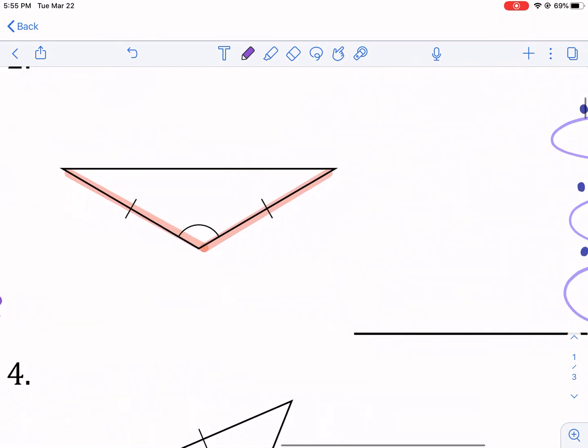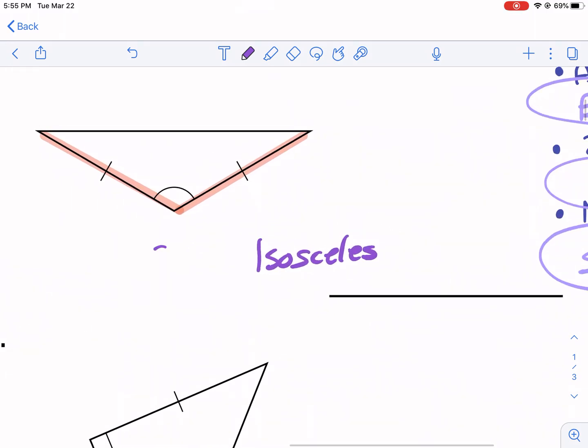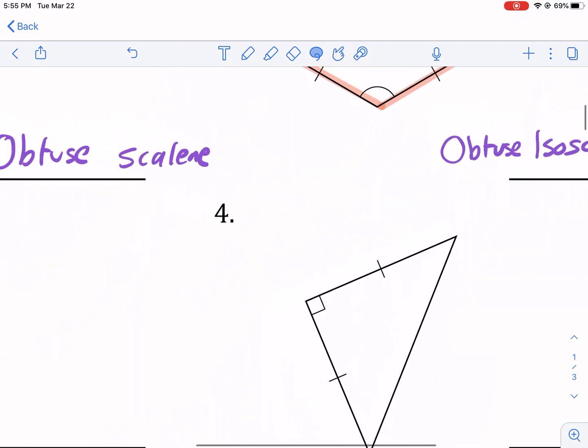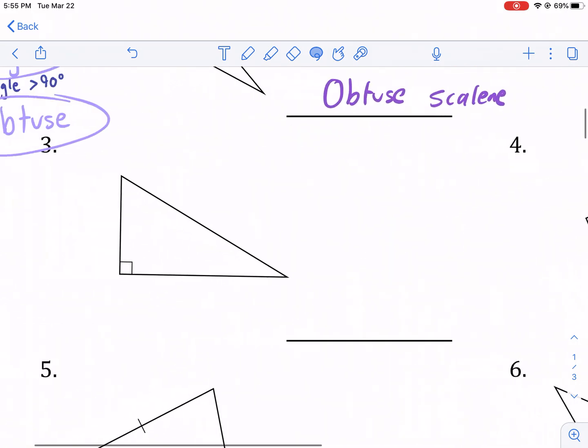So we're going to call this guy isosceles. And then we know that this angle is definitely above 90 degrees. So we're going to call it an obtuse isosceles. It doesn't sound as good when you call it an isosceles obtuse. Use the angle metric before the side metric, the naming system.